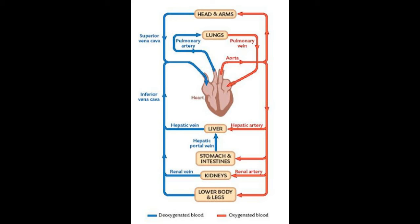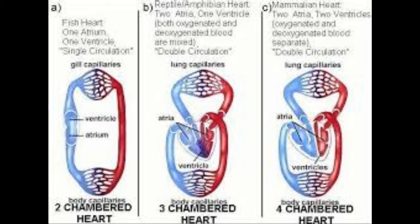Double circulation is not present in all organisms. In fish, there is single circulation — gaseous exchange takes place in the gills where a network of capillaries is present. The heart pumps deoxygenated blood to the capillaries of the gills where oxygenation occurs, and from the gills blood is supplied to the whole body without coming back to the heart again. Blood moves through the heart only once.